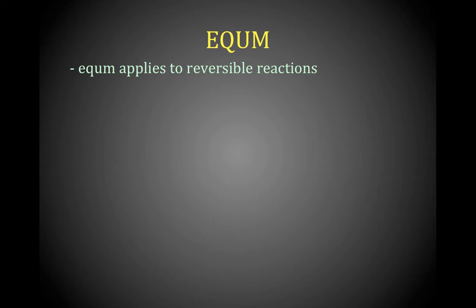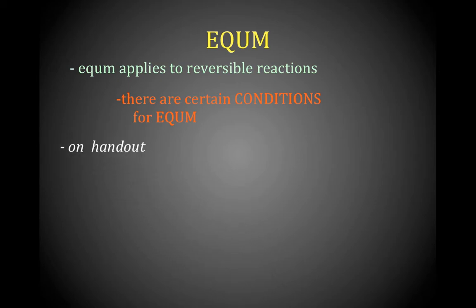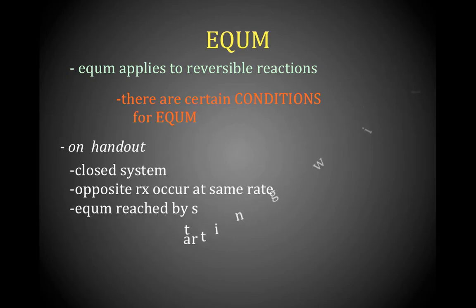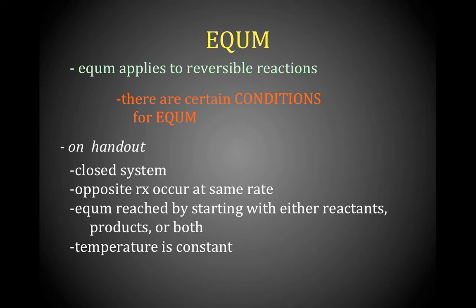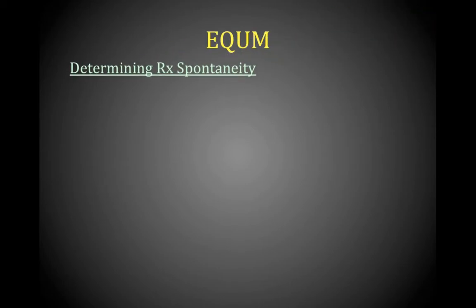Equilibrium applies to reversible reactions. Let's look at the conditions needed. First, the system has to be closed — sealed, with a lid — so nothing can enter and nothing can escape. The opposite reactions occur at the same rate: every time the forward reaction happens, the reverse reaction happens. You can reach equilibrium by starting with all the reactants, all the products, or both. Temperature is constant, and other macroscopic properties such as pressure and amount of solid will be constant.